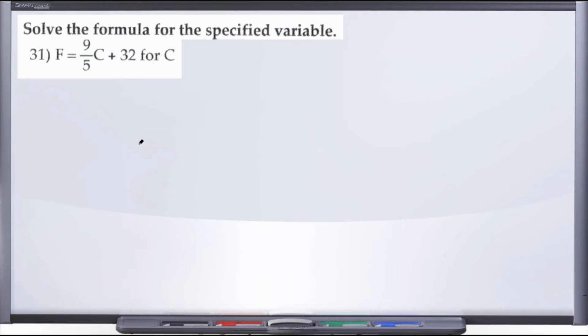All right, cruising right along here with number 31. We are asked to solve the formula for the specified variable, and they give us F equals 9/5 C plus 32, and they want us to solve for C.